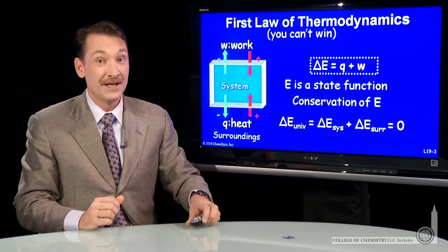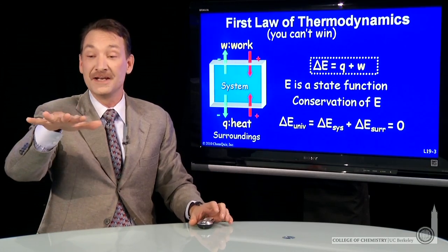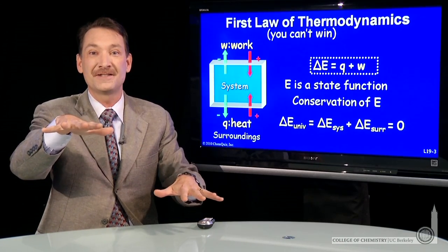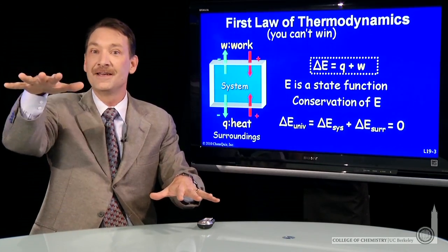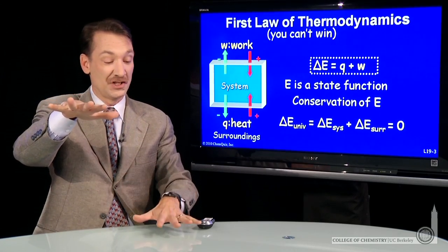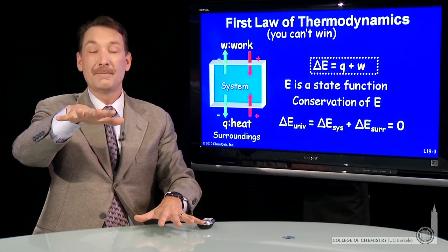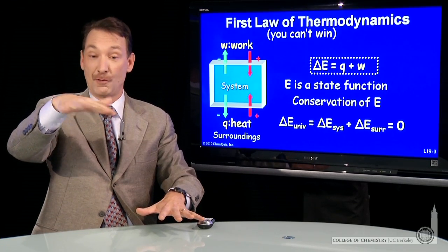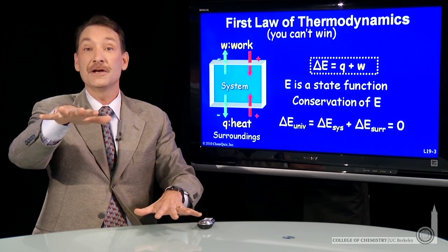Energy is a state function. And that means it depends only on the initial and final states of the system, not on the path to get there. That is, if I'm at the top of a hill and I jump down to the bottom of the hill, my gravitational potential energy changes. I have more potential energy here than I do here.